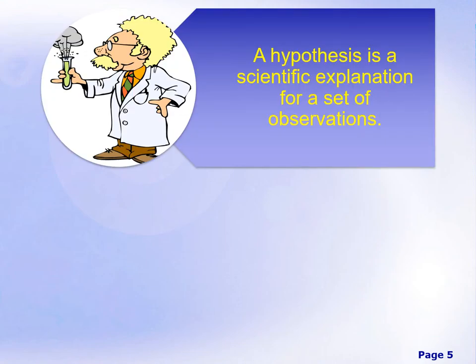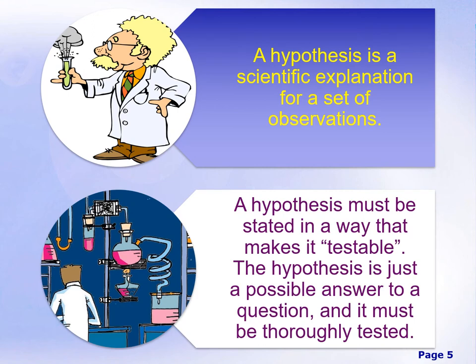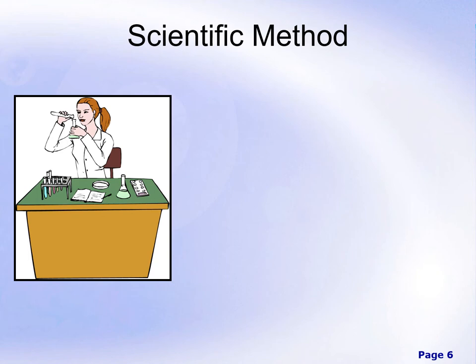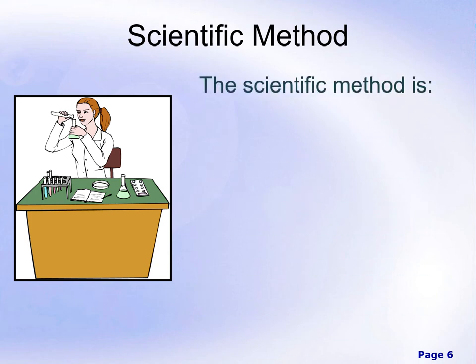A hypothesis is a scientific explanation for a set of observations that we see in the natural world. A hypothesis must be stated in a way that makes it testable. It is just one possible answer to a question and must be thoroughly tested to gather evidence. I really want you to cement the difference in your minds between a theory and a hypothesis, because colloquially and in pop culture we use the word theory very incorrectly quite often.